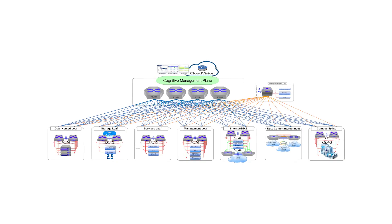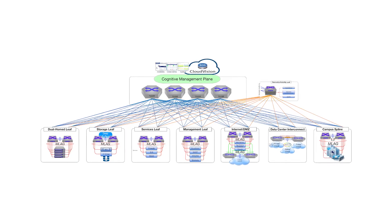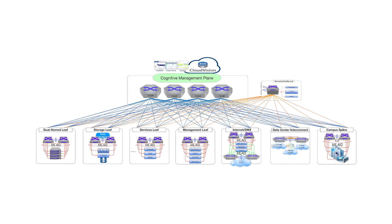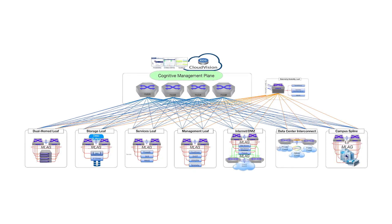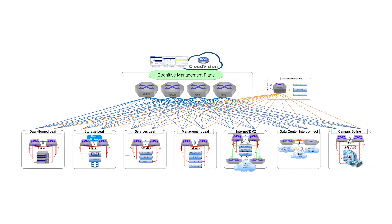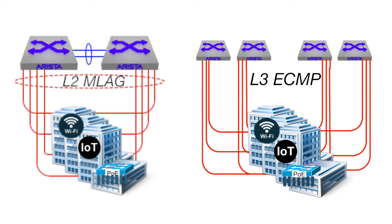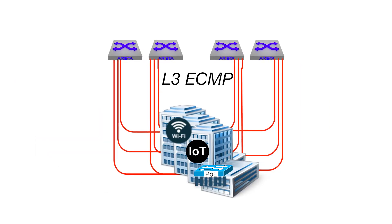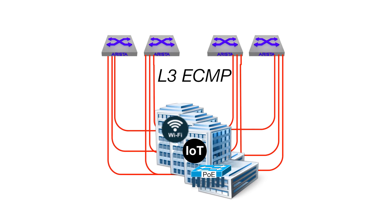How do we design a network to accommodate this new cognitive management plane and the universal cloud network campus architecture? We learned a lot from building large-scale data centers. The simplest way to think about this design is to run the campus spine as a set of leaf switches connected to the data center spine. You could have many different campus spines depending on your physical plan, or a single two- or four-way campus spine with all building spine switches connecting up to it. A four-way spine with routing gives much more resiliency, but not everyone has that kind of fiber between campus locations and data centers.